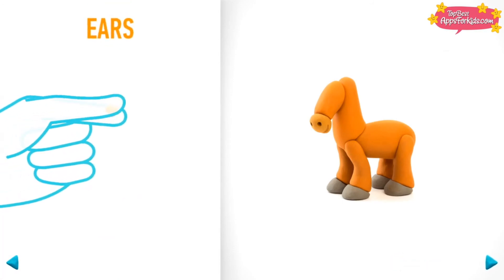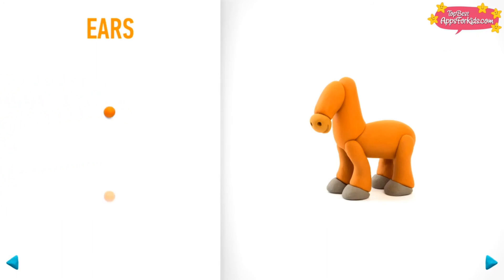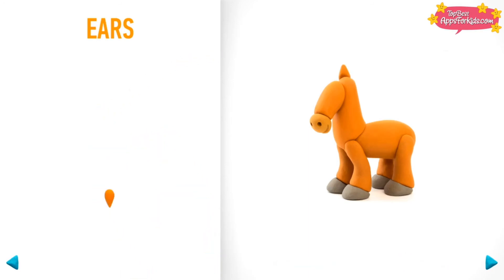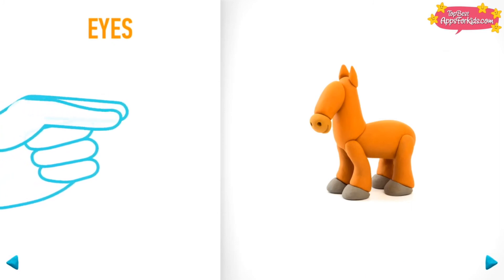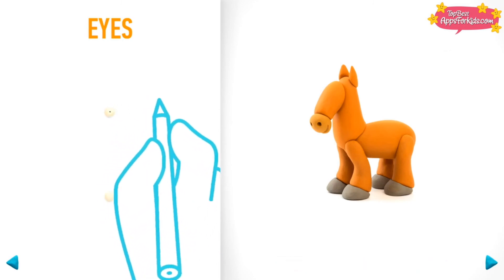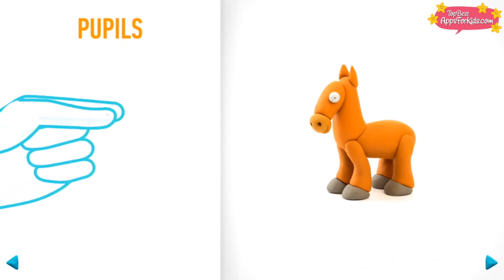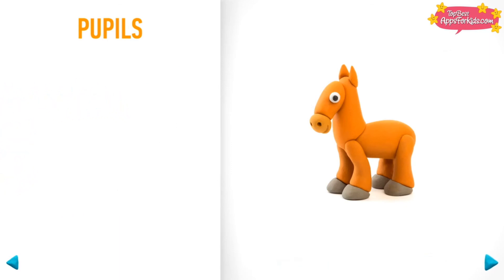Let's model ears. Take a piece of light brown clay and roll two little balls, then roll into a cone with your fingers. Ears are done! It's time to model eyes. Take a piece of white clay and roll two little balls, then make a deepening with a pencil. Eyes are done! Next, make pupils. Take a piece of black clay and roll two little balls. Pupils are done!